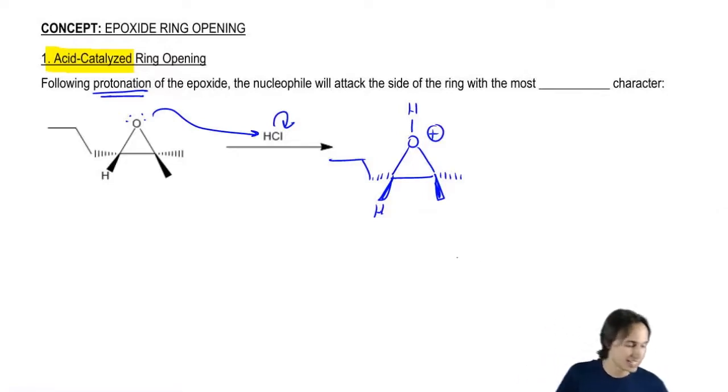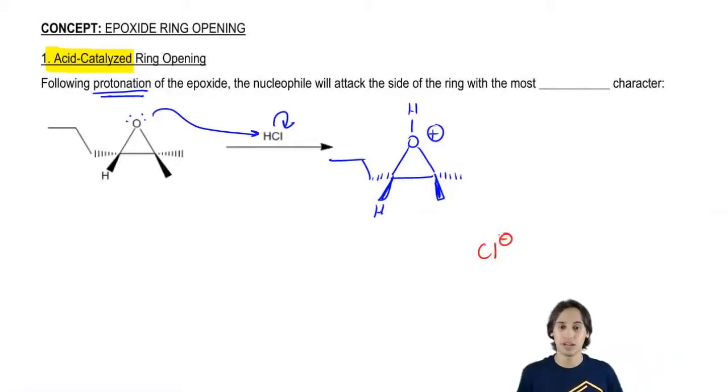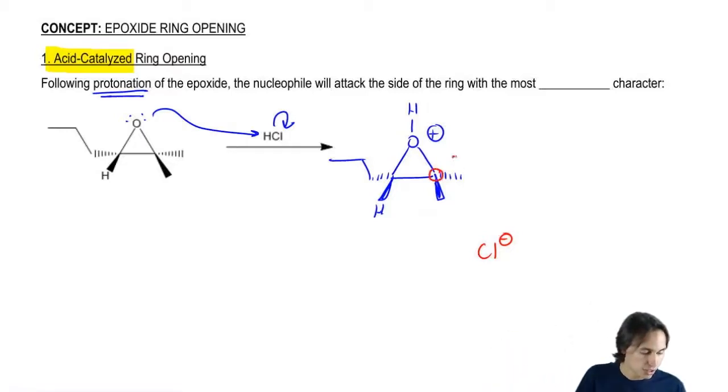Now I've got Cl- and the Cl- wants to break open the ring. But it's trying to decide which side to break. Is it going to break the most substituted, the tertiary, or the least substituted, the secondary?